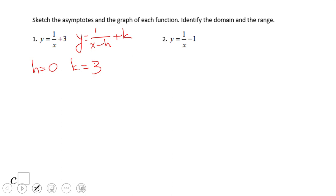These two numbers have two meanings. H equals zero, like I said, is the vertical asymptote, so it's going to be this gentleman. And k equals three is the horizontal asymptote one, two, three. We have this guy here.